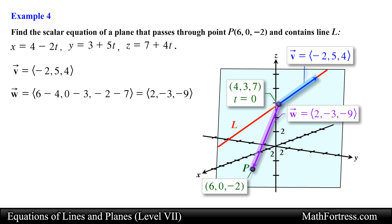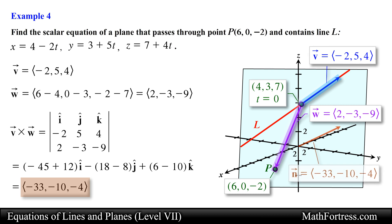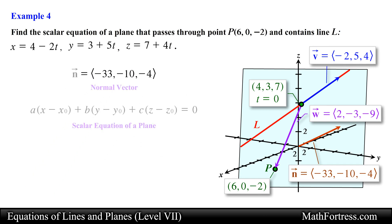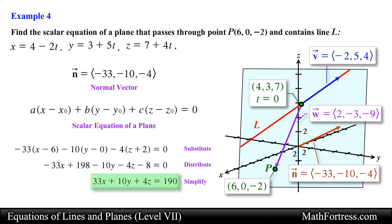Now that we have two non-parallel vectors on the plane, we cross vectors V and W by setting up a determinant and expanding by cofactors to obtain the normal vector. This vector is normal to both vector V and vector W as well as the plane. We substitute the coordinates of point P and the components of the normal vector into the scalar equation of the plane, and simplifying we obtain the following scalar equation of the plane — this is our final answer.